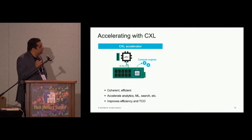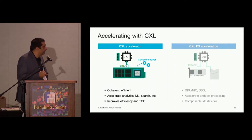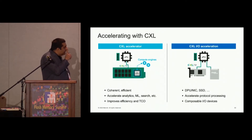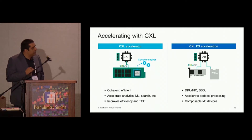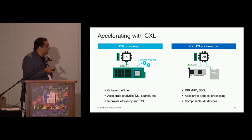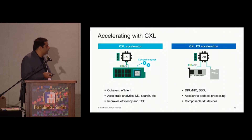CXL 3.0 actually enhances some of these use cases that we can offer even with 2.0. Similarly, you can do IO acceleration — getting a NIC or a DPU connected over CXL to an XPU device — and get similar benefits as with memory.